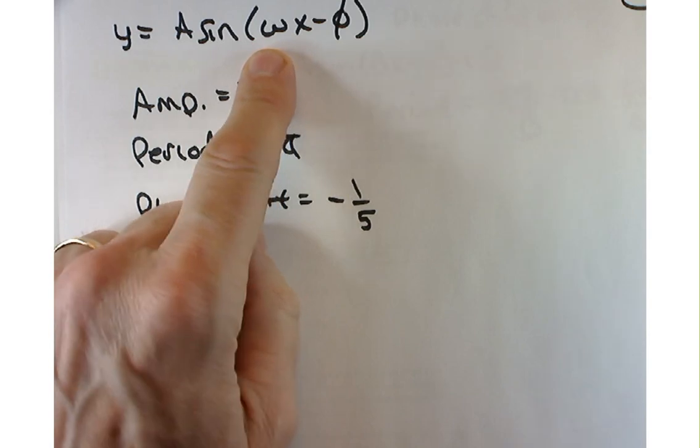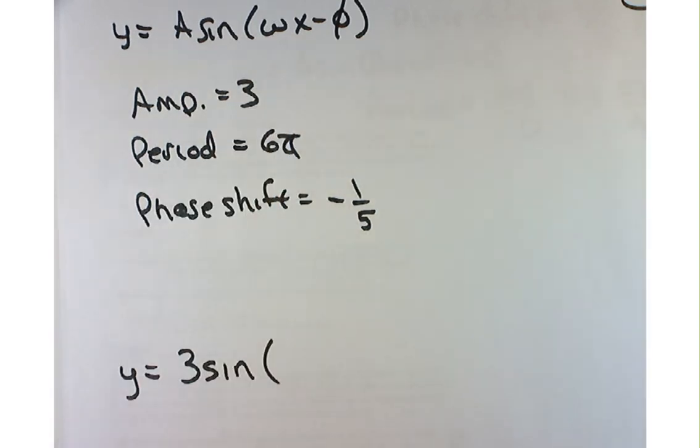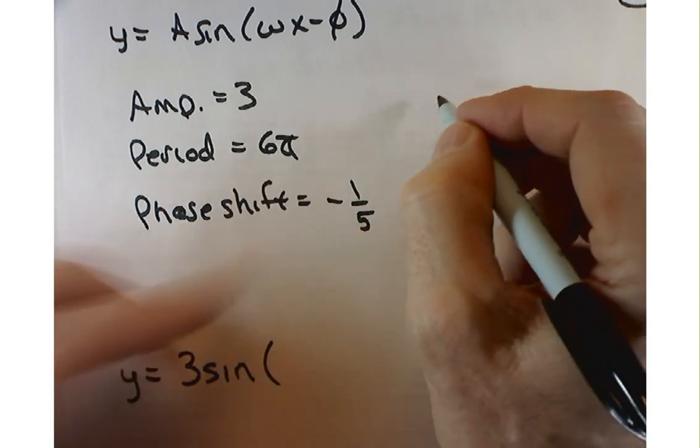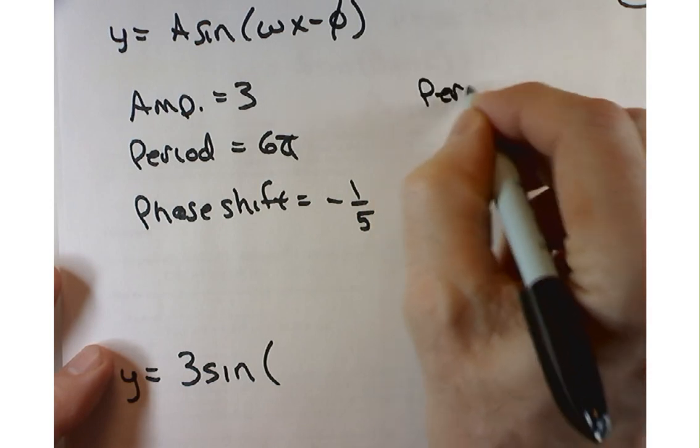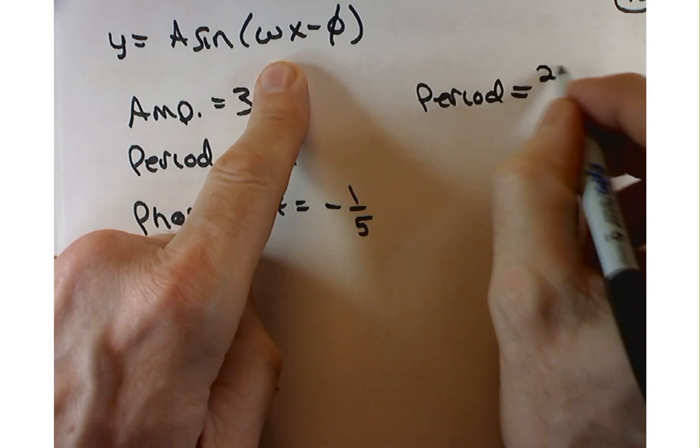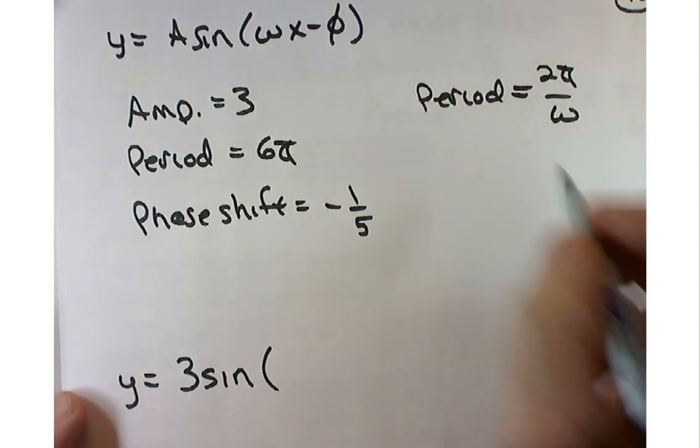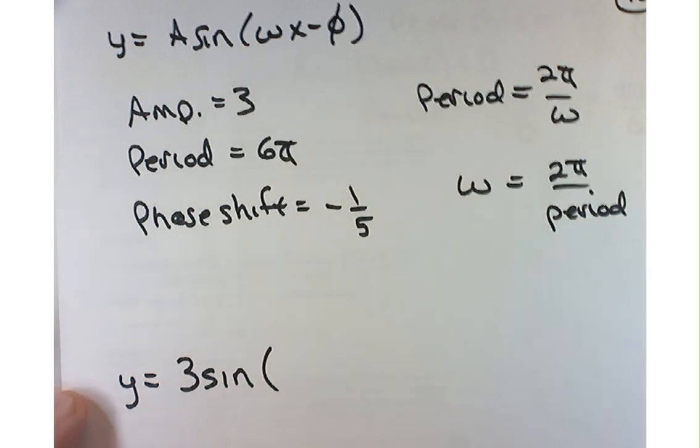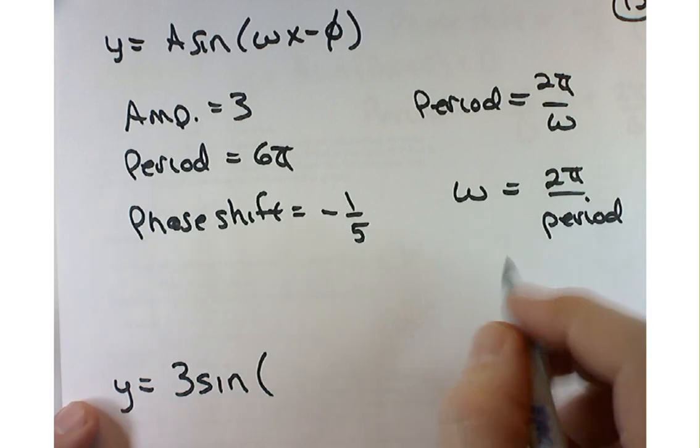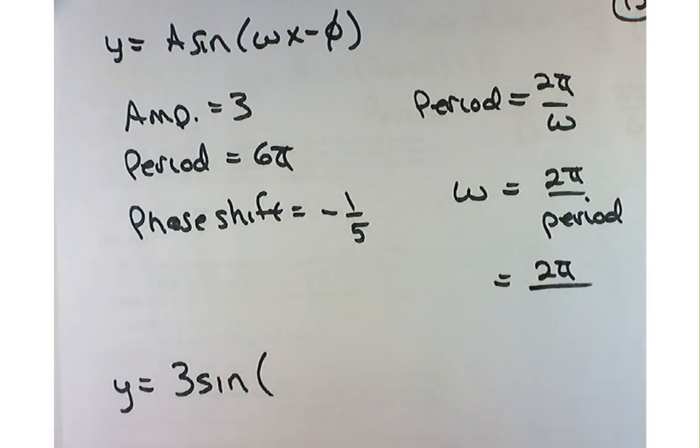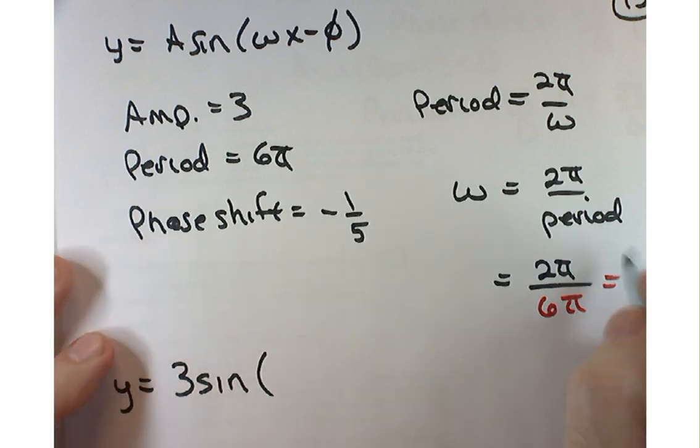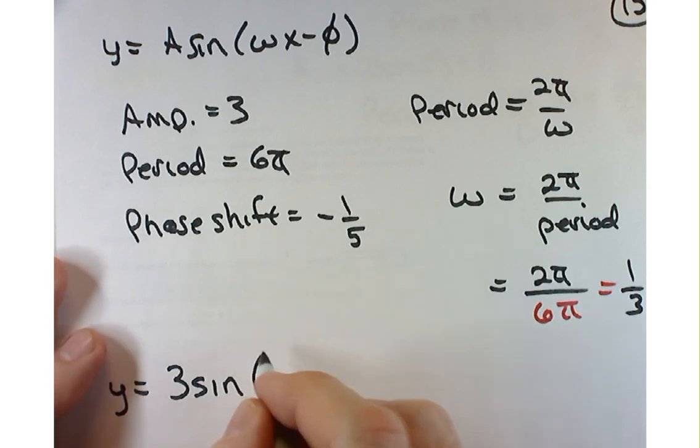The amplitude equals 3, that should be kind of a gimme, right? My function is going to look like 3 times sine of something. Let's try and focus our attention on figuring out what this is. It looks like a W the way I've drawn it - that's really an omega. Where does omega fit in? The period in this graph is going to be 2 pi divided by omega. Or if you solve for omega, omega equals 2 pi divided by the period. So what's omega going to equal in this case? Does that simplify at all? 1 third. So this is 1 third X minus phi.